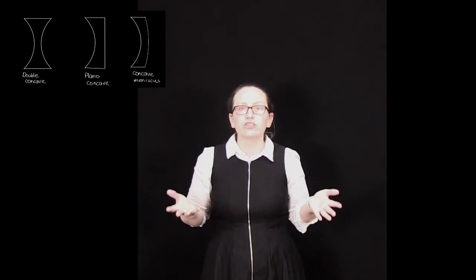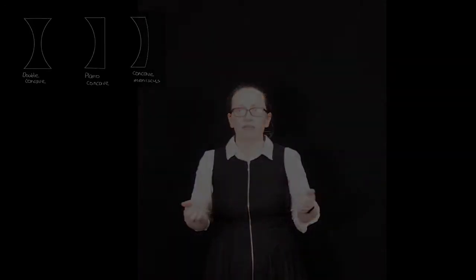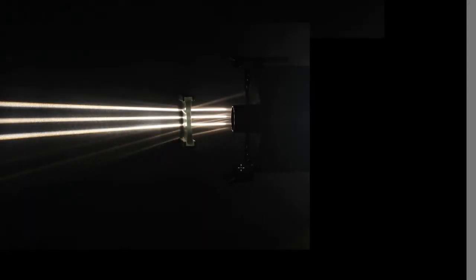Let's have a look at how images are formed with these lenses now. So what we have here is an image of parallel rays coming out of the light box. They're falling on a double concave diverging lens, at which point they're starting to diverge.